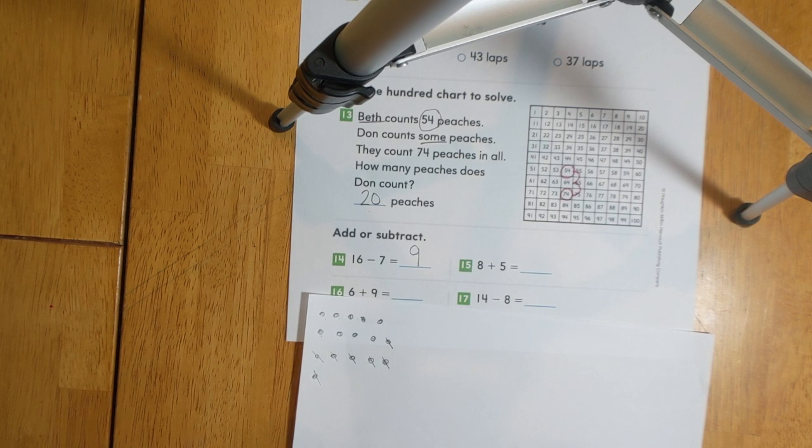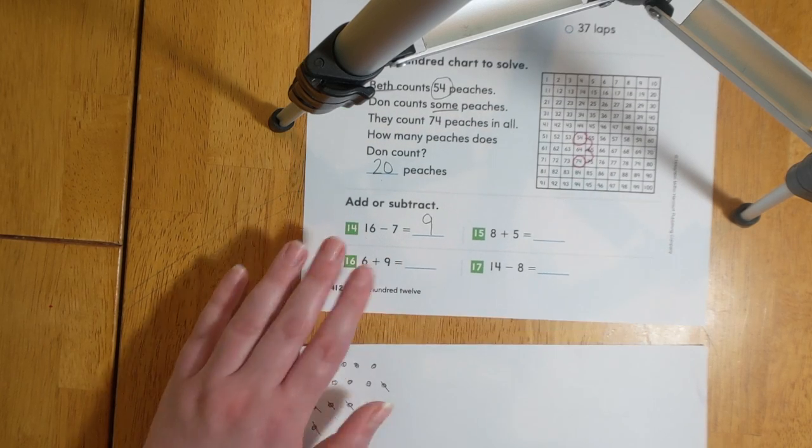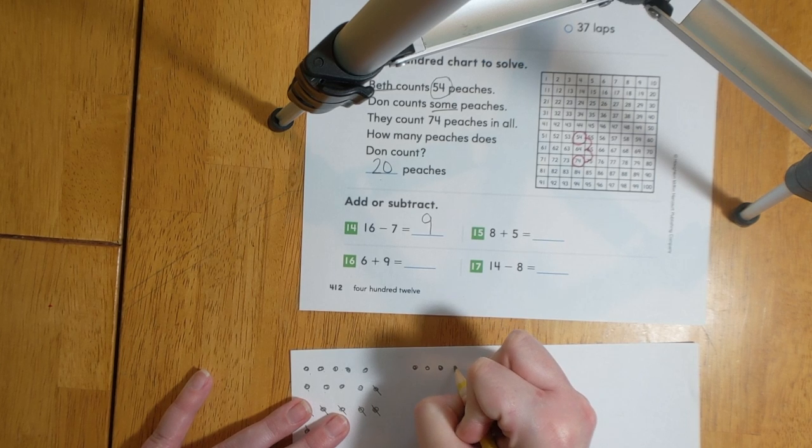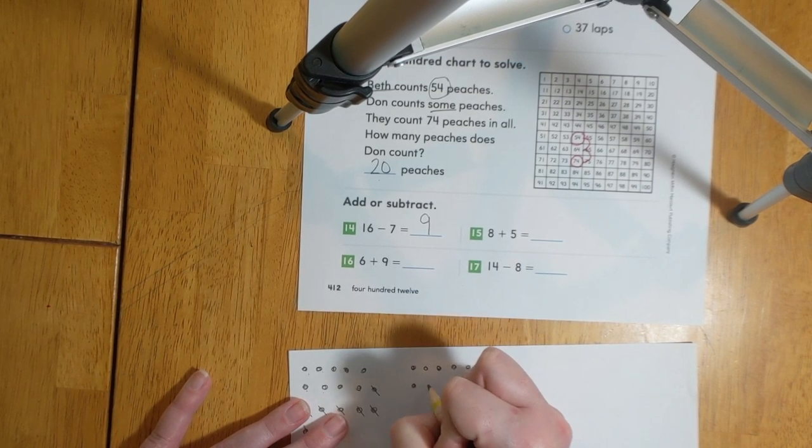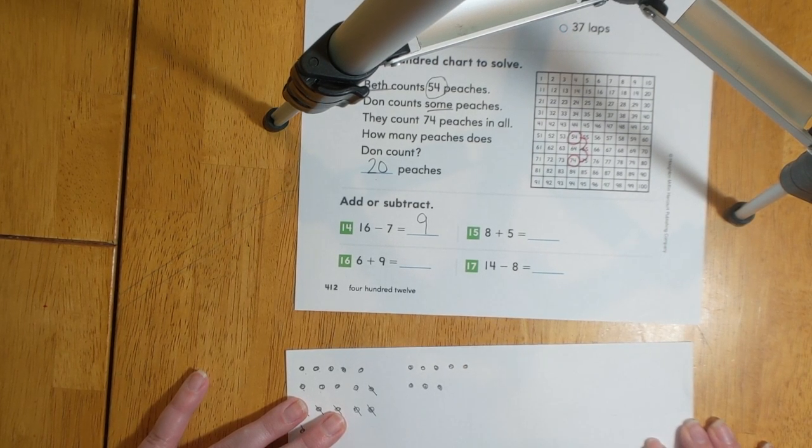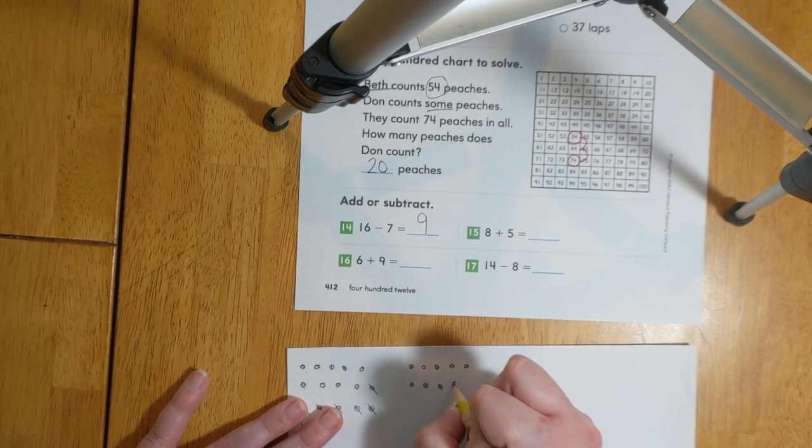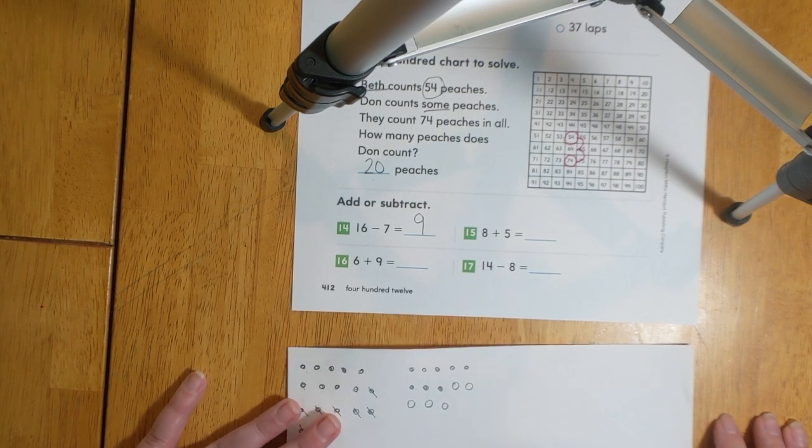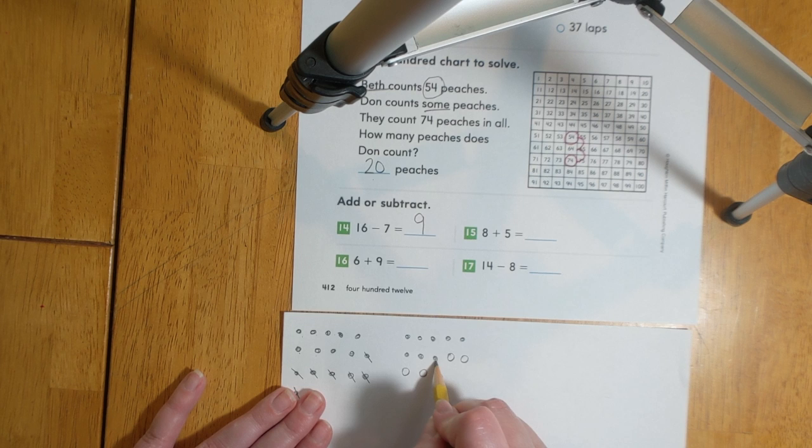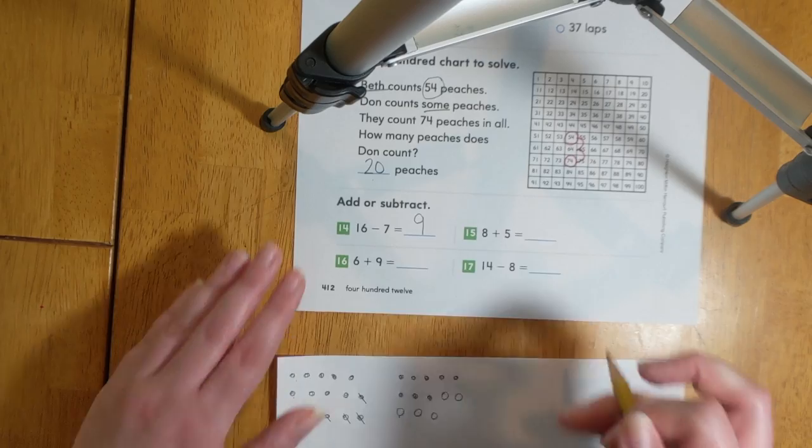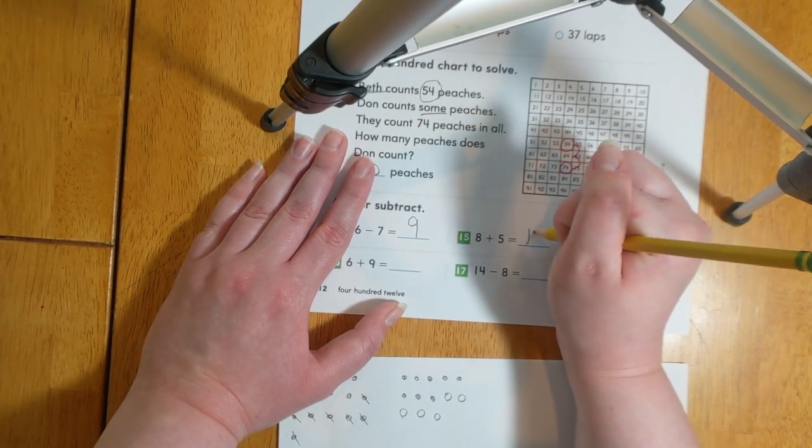Let's try number 15. 8 plus 5. Let's count on to solve. We'll start with 8. Then let's add 5 more. That gives us a total of 8, 9, 10, 11, 12, 13. So 8 plus 5 equals 13.